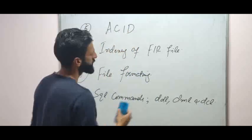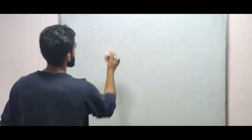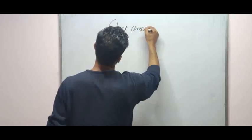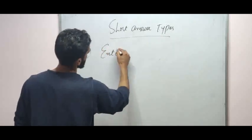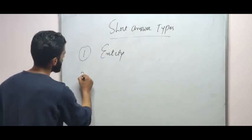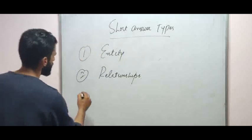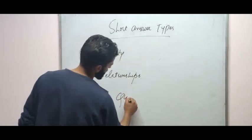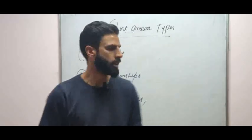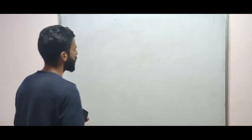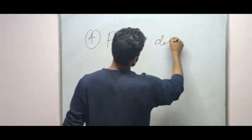Now we will cover the short answer type questions. The first question will be: define entity. The second question will be on relationships. The third question will be SQL queries. The fourth question will be functional dependency and data dependency.